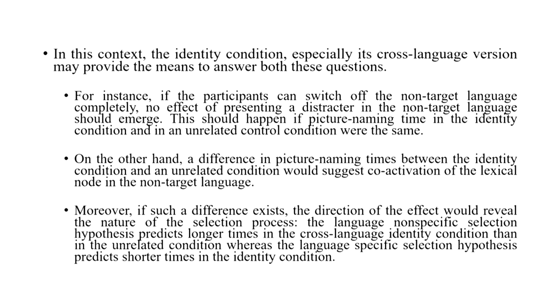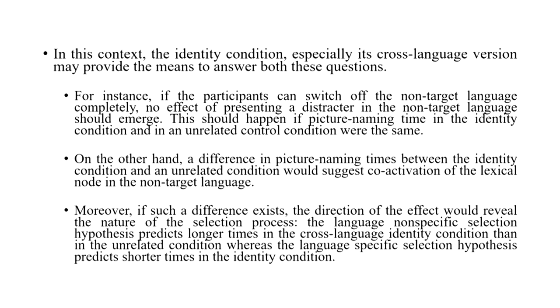In this context, the cross-language identity condition — presenting the picture of a table with the Spanish 'mesa' while participants must name it in Catalan — provides a way to answer both questions. If participants can switch off the non-target language completely, no effect of presenting a distractor in the non-target language should emerge — that is, naming times in the cross-language identity condition and in the unrelated control condition should be the same. On the other hand, a difference between those two conditions would suggest some degree of co-activation of lexical nodes in the non-target language.